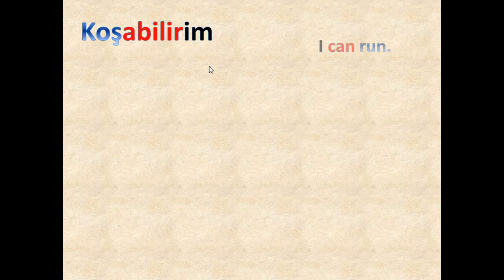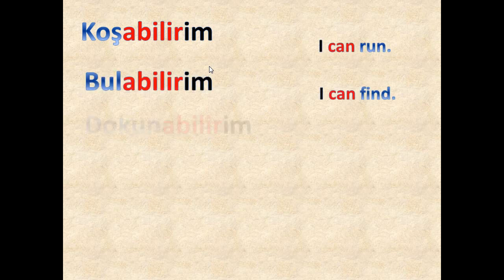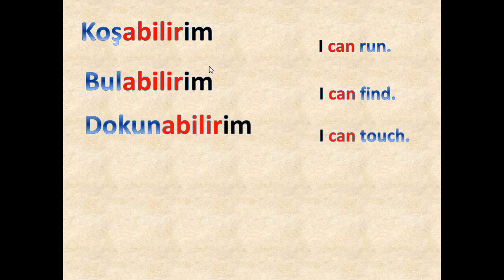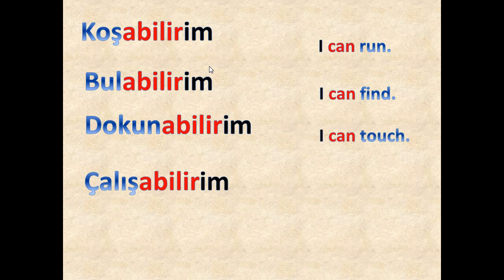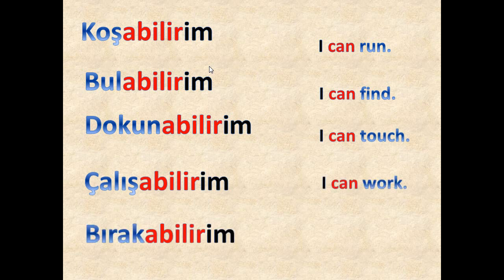'Koşabilirim' means 'I can run'. 'Bulabilirim' means 'I can find'. 'Dokunabilirim' means 'I can touch'. 'Çalışabilirim' means 'I can work'. 'Bırakabilirim' means 'I can leave' or 'I can give up'.